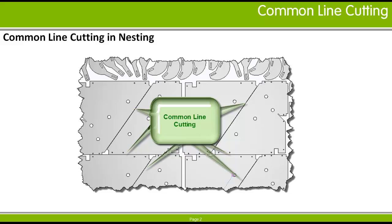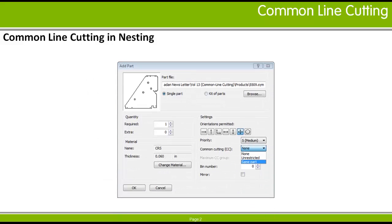For profiling machines, when using true shape nesting, you can specify that a part is suitable for Common Line Cutting by setting the Common Cutting control when you add the part to the nest schedule.